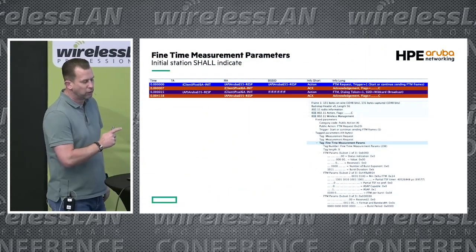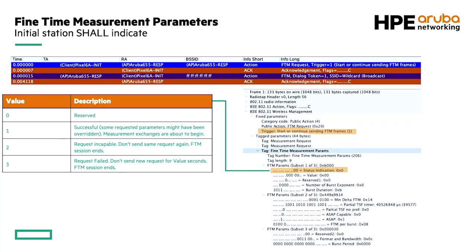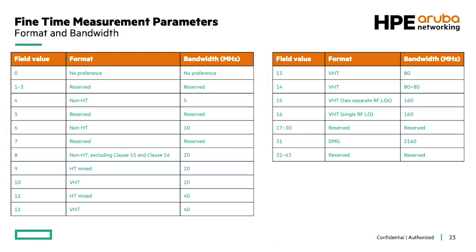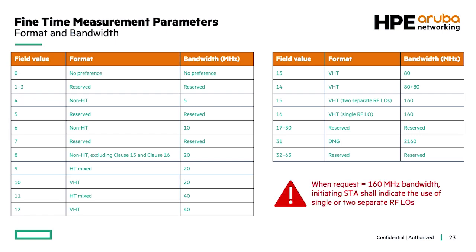The frame shall indicate whether it is a start or continuous sending frame, and there's a status indication — most of the time it's zero, but it can also be one, two, or three. Importantly, you need to set your format and bandwidth upfront in the request frame. The higher the bandwidth, the more accurate your locationing. If you're using 160 MHz, you also need to indicate whether you're using a single or two RFLOs.